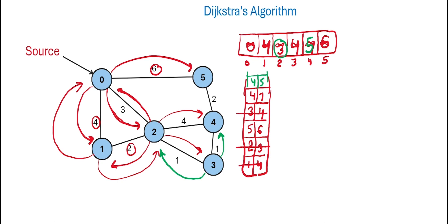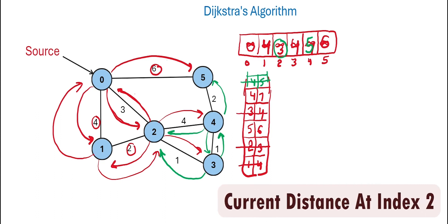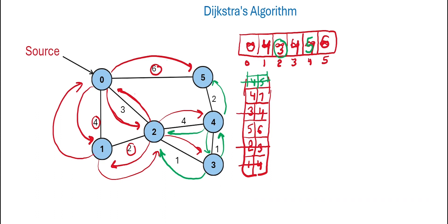We pick node 4 with minimum distance 5 from the priority queue. From node 4, we can move to nodes 2, 3, and 5. Moving to 2 gives distance 9, more than current, so we ignore it. Moving to 3 gives a distance more than current, so we ignore it. Moving to 5 gives distance 6, which is also more than the current distance, so we ignore that as well.